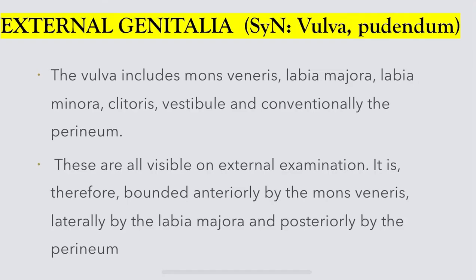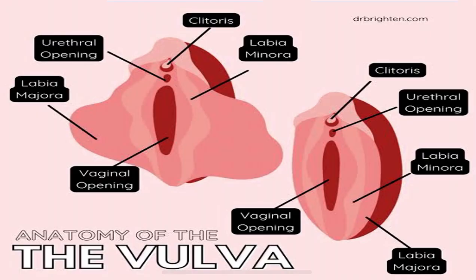Starting with external genitalia — synonym is vulva or pudenda. The vulva includes the mons veneris, labia majora, labia minora, clitoris, vestibule, and conventionally the perineum. These are all visible on external examination. They are bounded anteriorly by the mons veneris, laterally by the labia majora, and posteriorly by the perineum.